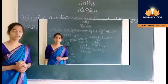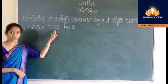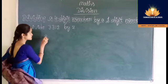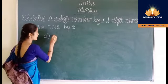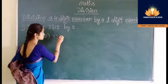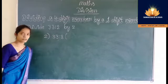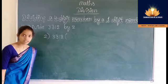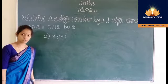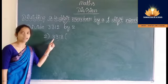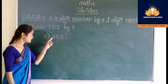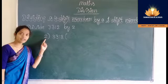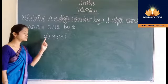Divide 3312 by 2. Here 2 is the divisor and 3312 is the dividend. Since the divisor is a one-digit number, we consider the leftmost digit of the dividend, that is 3. Compare 3 with 2 — 3 is greater than 2, so we can divide 3 by 2.